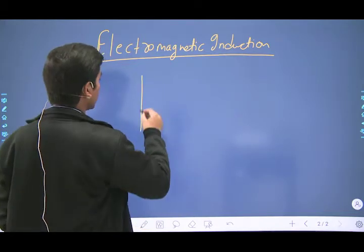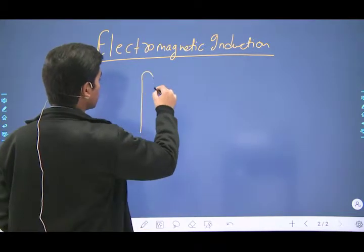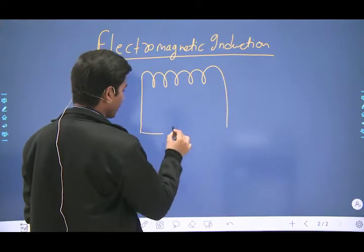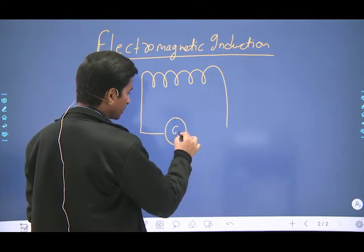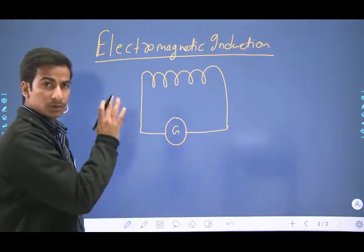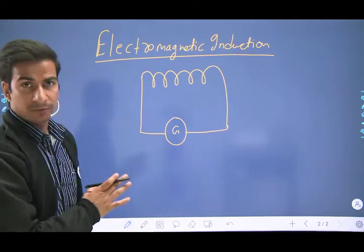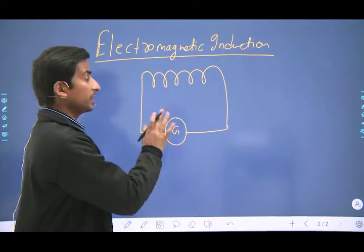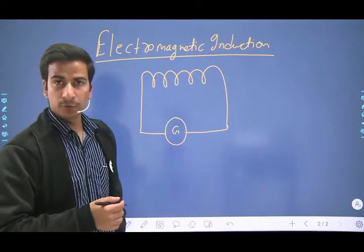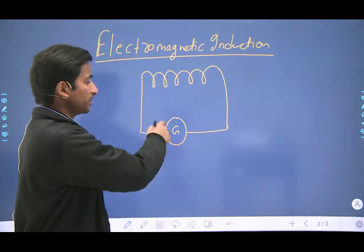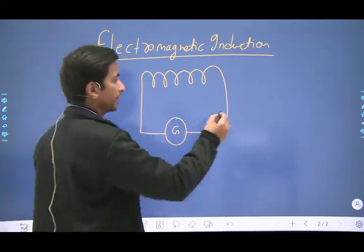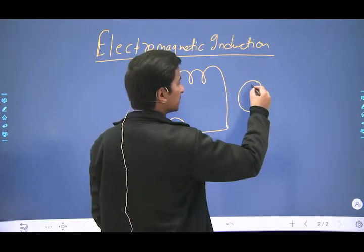In electromagnetic induction, we use a coil of some turns and connect a galvanometer across the ends of the coil. This coil has no potential difference source, meaning in the absence of any battery there will be no current flowing, so the galvanometer will show zero deflection — the needle will remain at the center.